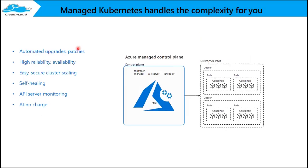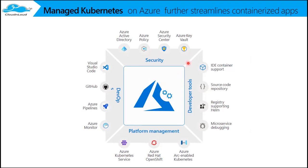Automated upgrades and patches — the master node control plane manages all worker nodes. On top of the cluster, whatever containers are running, it is easy to scale. Even if anything goes wrong, there are options you can configure. You can monitor each and every action because all communication goes via API. There is no charge for that.